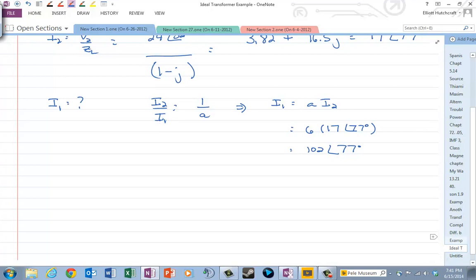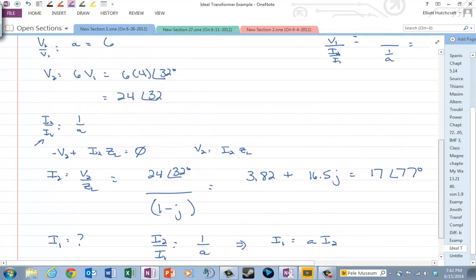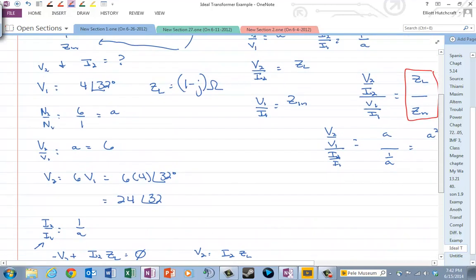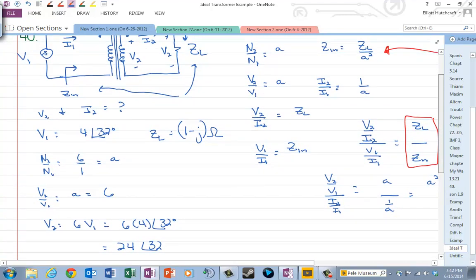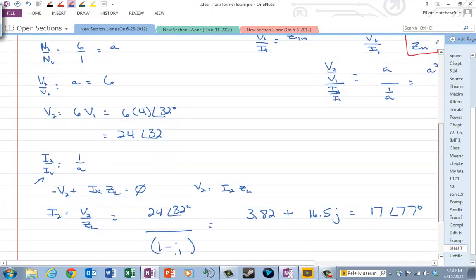Okay, so let me just say here a couple of things about this problem that you should note about ideal transformers. Notice what happened to V2 in relation to V1. Well, V2 got 6 times bigger because V1 was 4 angle 32, V2 became 24 angle 32. What happened to I2?